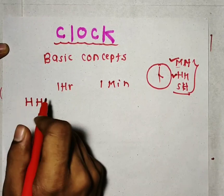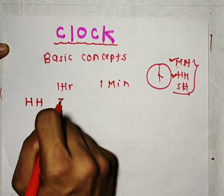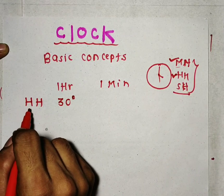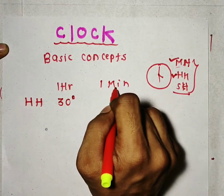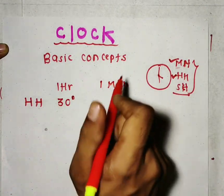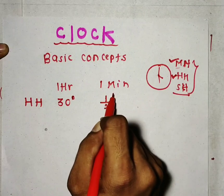In one hour, the hour hand goes ahead by 30 degrees. And in one minute, the hour hand goes ahead by only 1/2 degree.